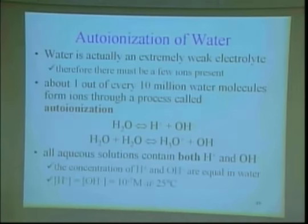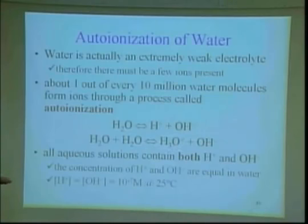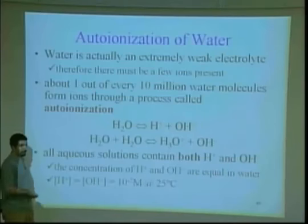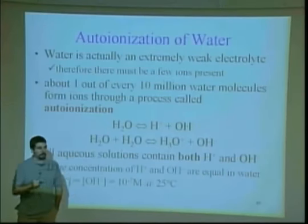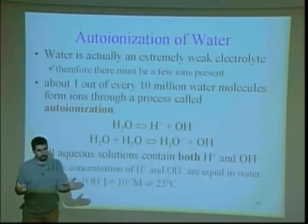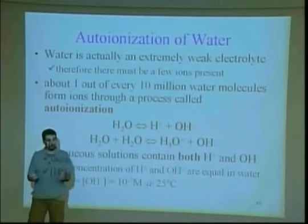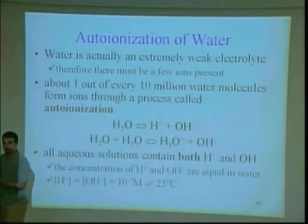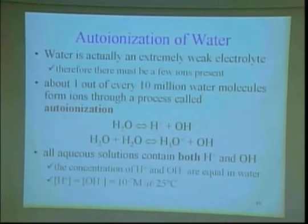Likewise, hydroxide would be exactly equivalent to that in pure water because they come from the same process. Whatever process produced hydrogen had to have been the same process that produced hydroxide, so they should be one-to-one. Now, why is this important? You've heard of the pH scale. How high does it go? 14. What is considered the neutral point? See that — 1×10⁻⁷. These exponents are all going to be related to the pH scale.